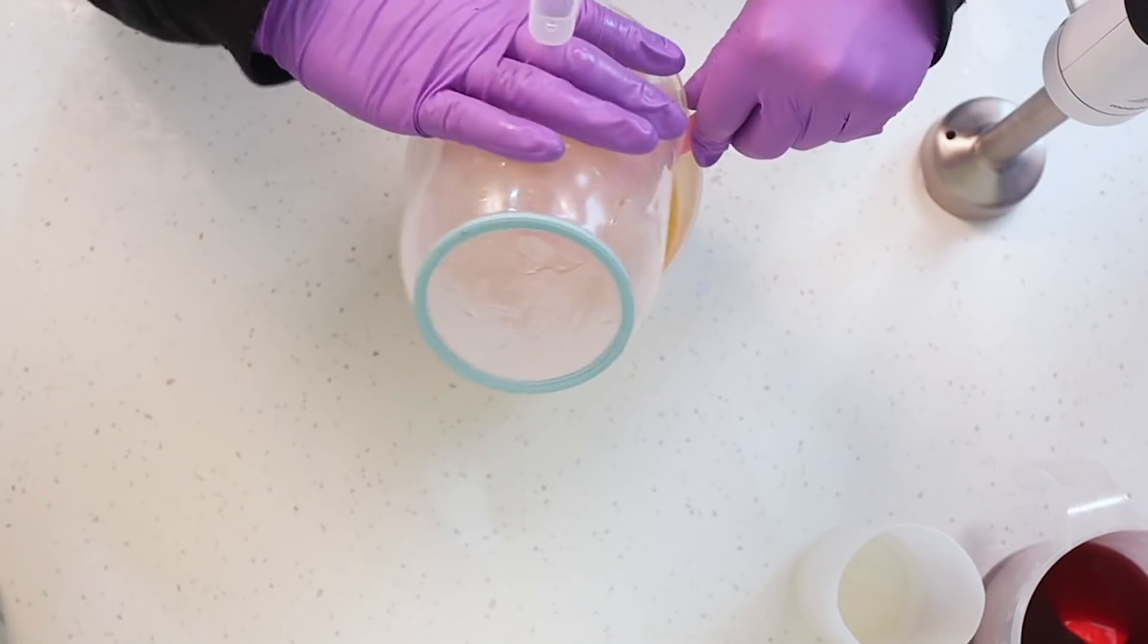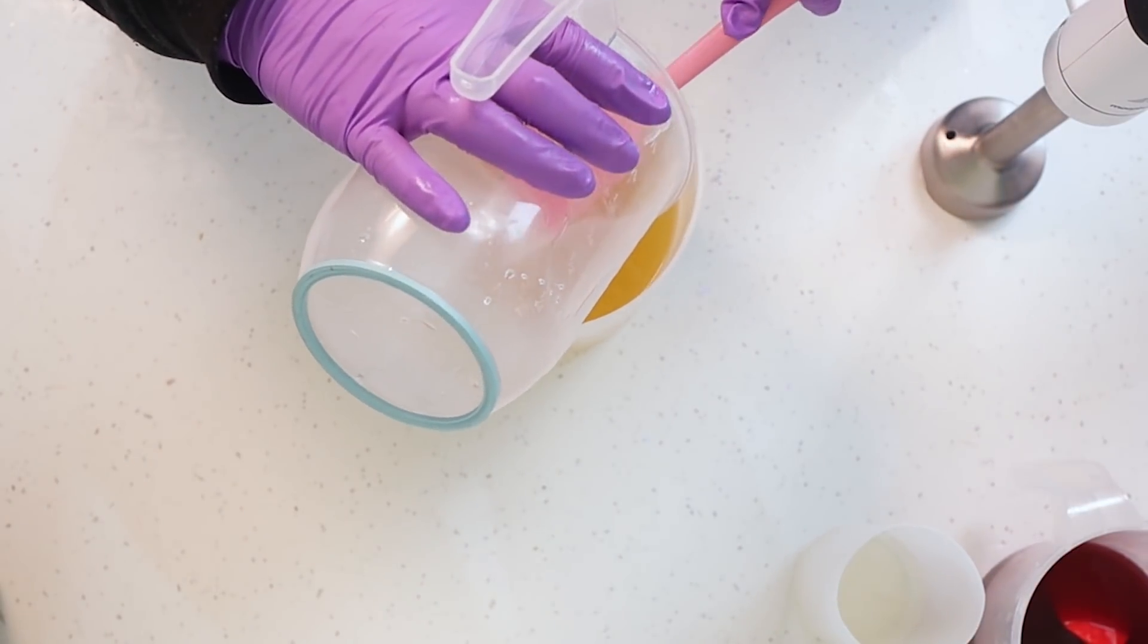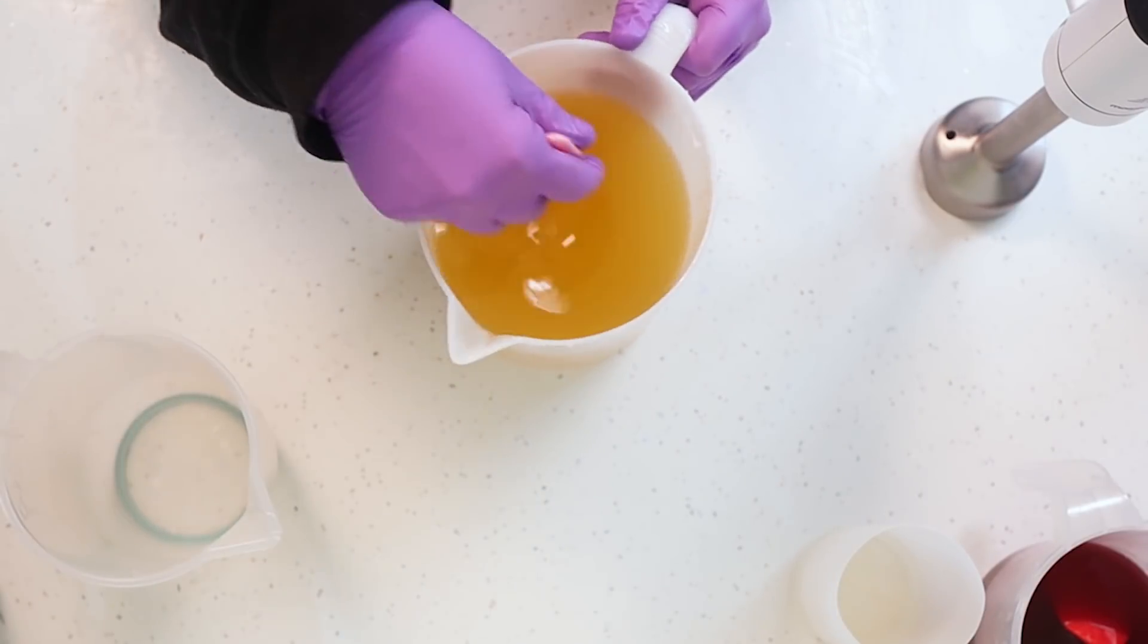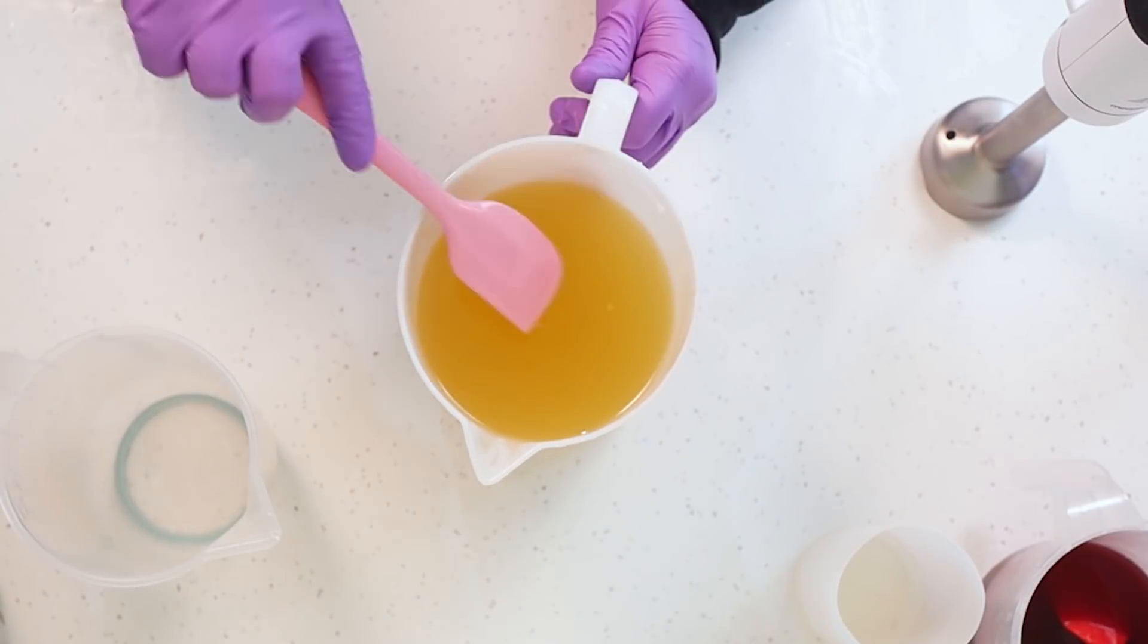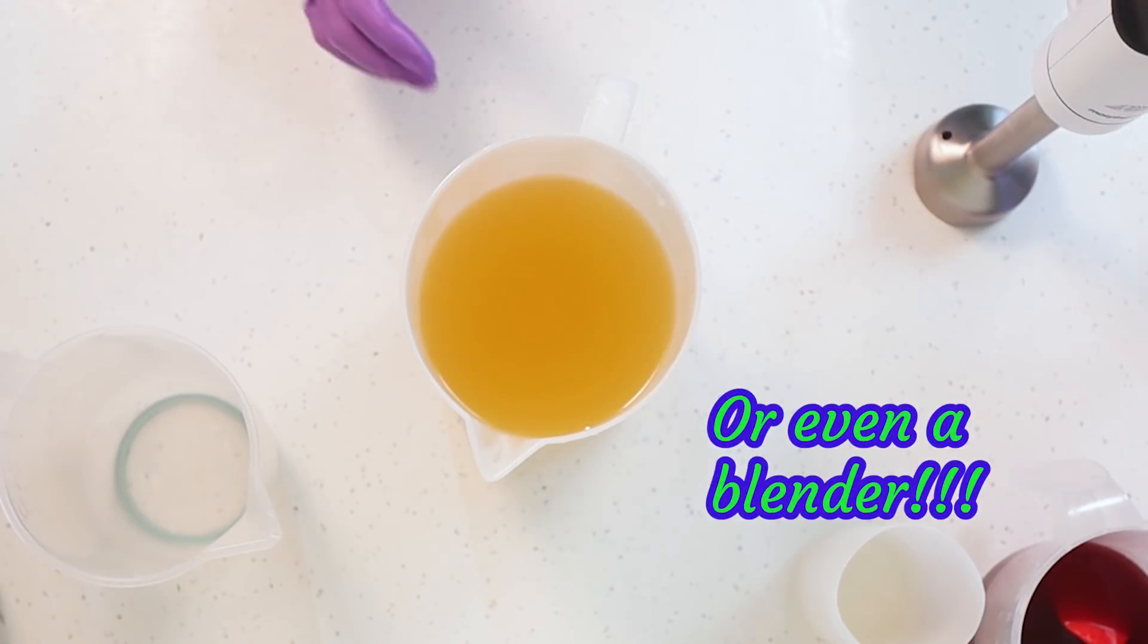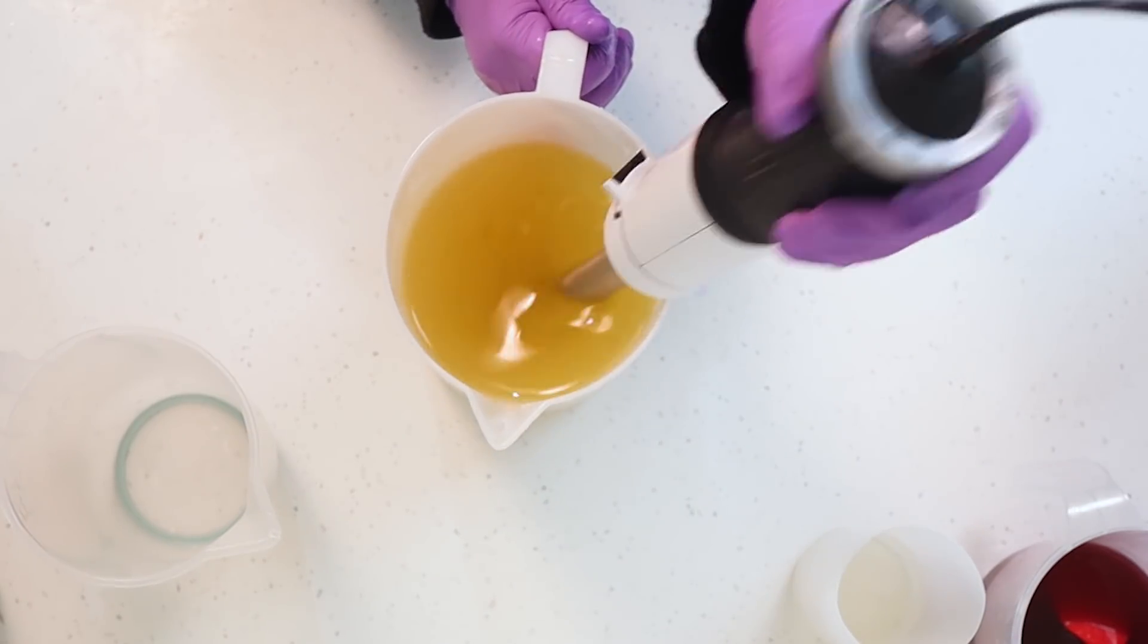So as I move on to the other three quarters of my soap batter and my lye, I'm just going to mix them together very lightly with the spatula. I am going to stick blend. I always stick blend my soap. I never bother with hand mixing but I do have a blender that has a nice low power setting so I find it quite safe to stick blend.